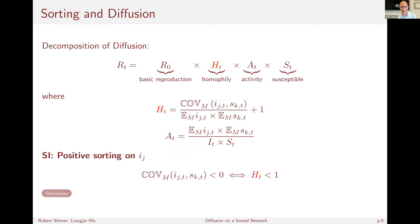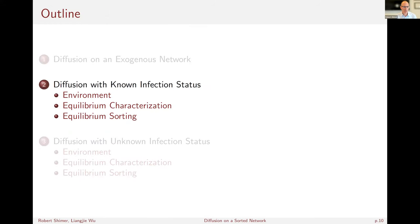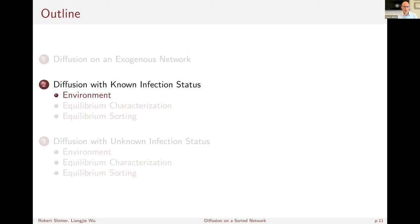Now for the main analysis — we want to think about what determines that capital M, who matches with whom. We want an environment where people are making decisions about who to match with. Why did my parents hide at home and not go to high school parties? We want to understand that kind of decision. So we're going to study an environment in which people know their own infection status and know other people's infection status as well.